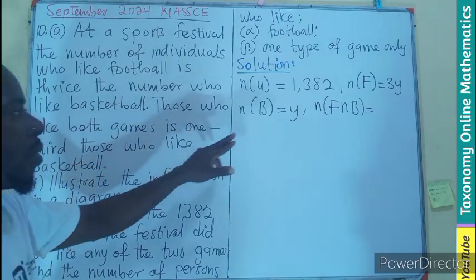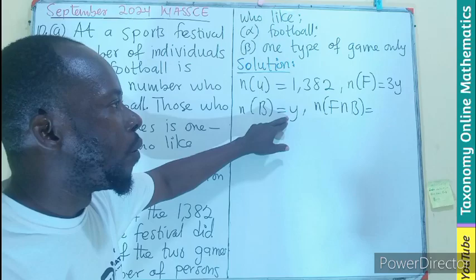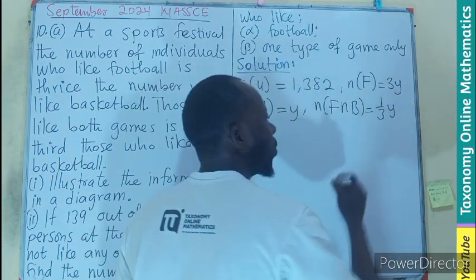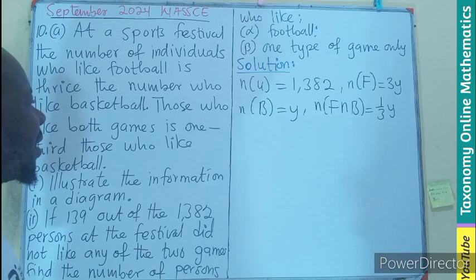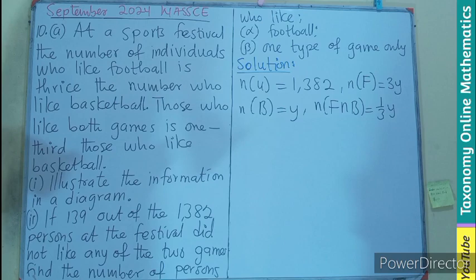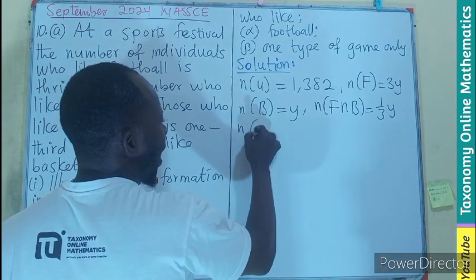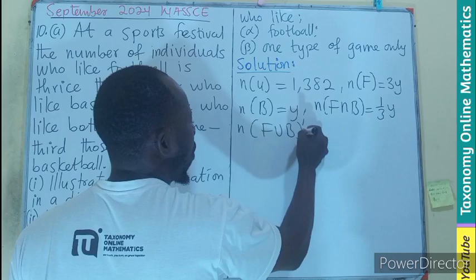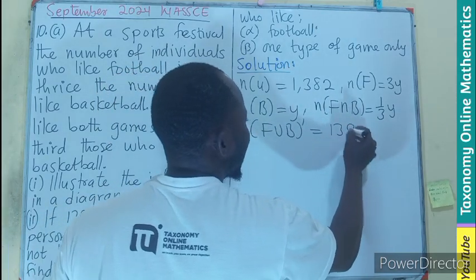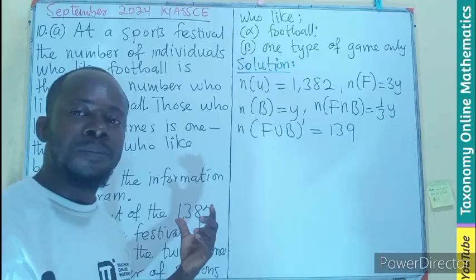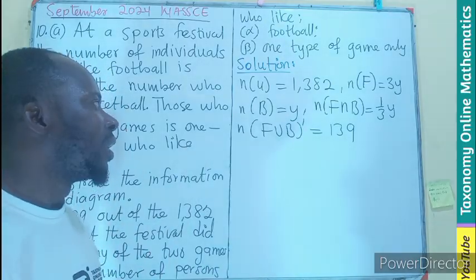Those who like basketball is y. The intersection of football and basketball — those who like both games — is one-third of basketball, so that will be y divided by 3. And 139 of them did not like either game; that becomes the complement. So n(football ∪ basketball)' = 139. These are the key pieces of information we extract from the question to draw the diagram.